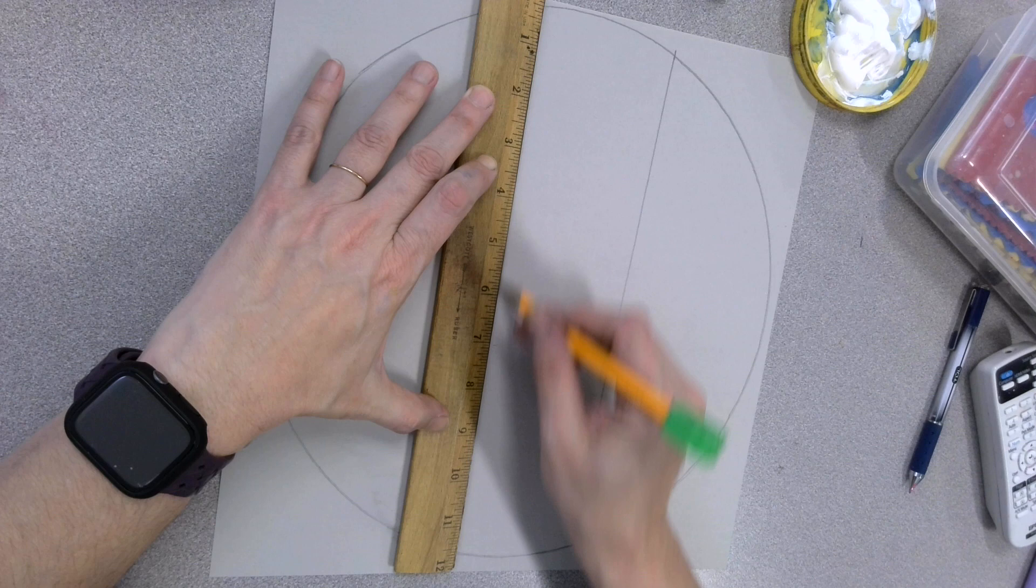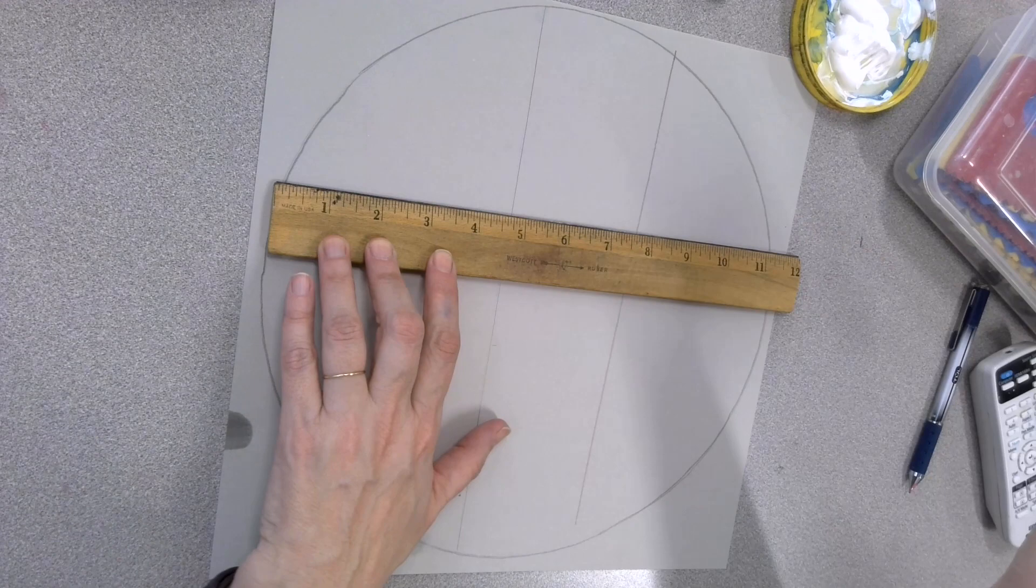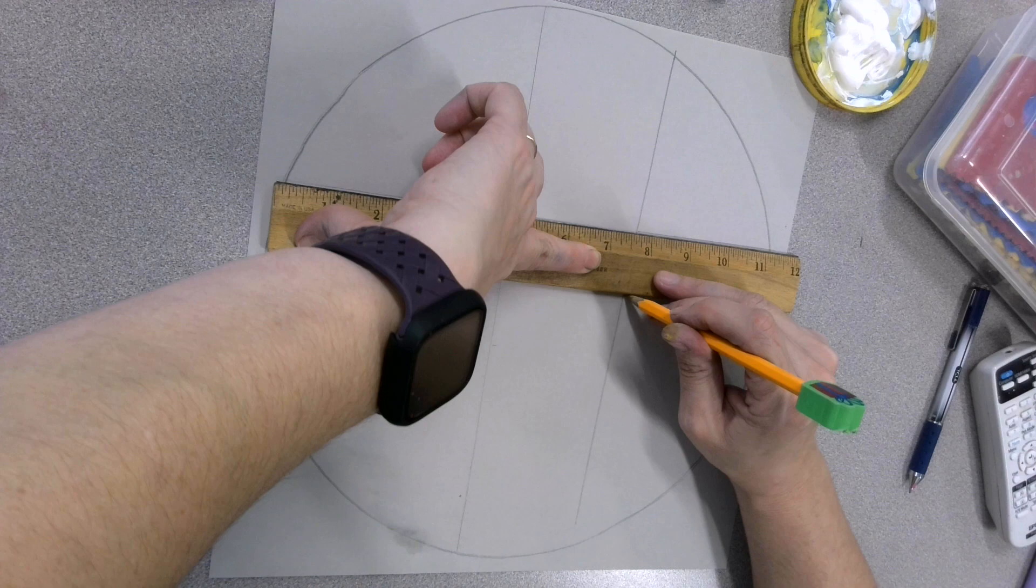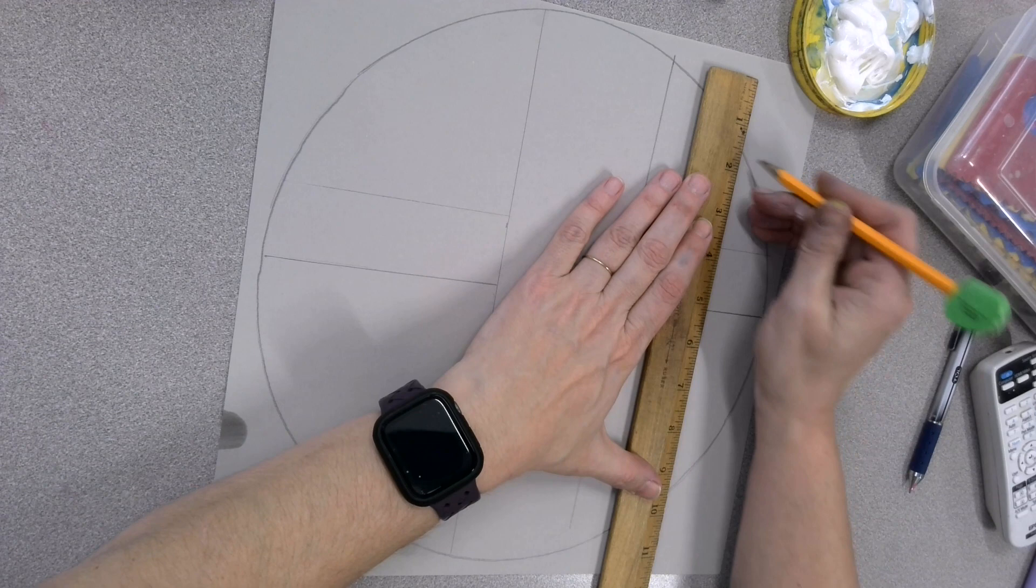And your stripes can go vertical like mine are. Your stripes can go horizontal. Sometimes you can just use the width of your ruler to make a nice straight line.